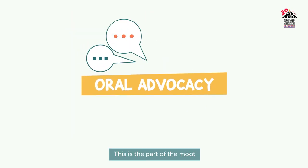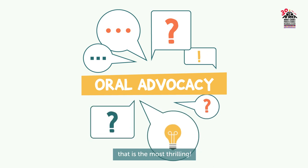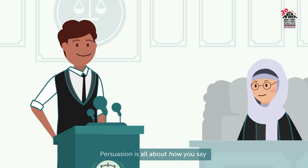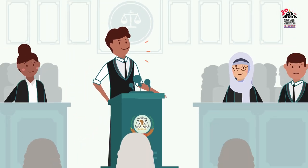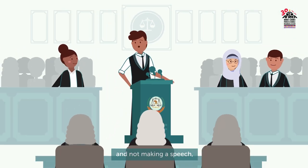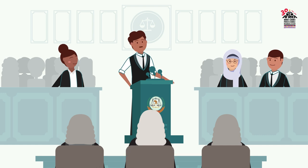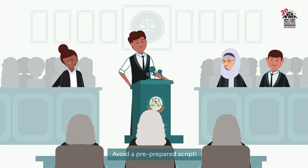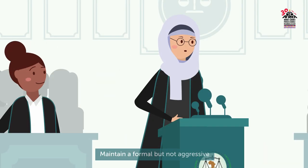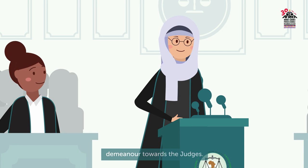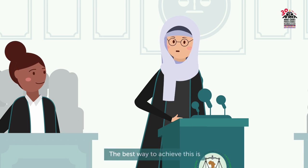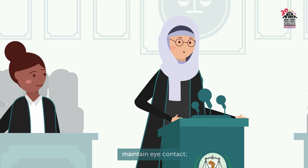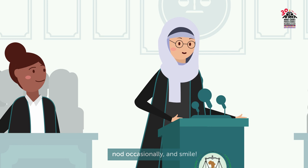Oral advocacy — this is the part of the moot that is the most thrilling. Persuasion is all about how you say things, not what you say. You are having a conversation, not making a speech, so speak to and not at your audience. Avoid a pre-prepared script. Maintain a formal but not aggressive demeanor towards the judges. The best way to achieve this is to rest your arms on the podium, maintain eye contact, nod occasionally, and smile.